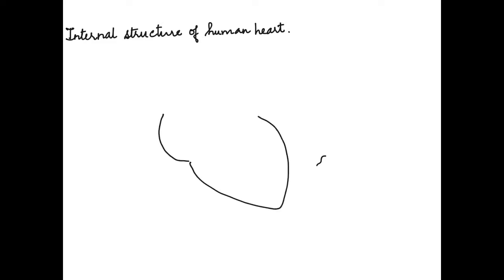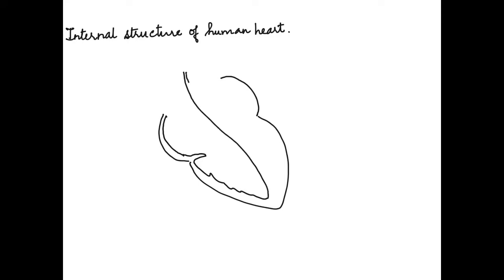We begin with drawing the upper chambers and the lower chambers. The upper chambers are thin-walled, so we trace the line inside to form a thin wall structure, make a projection for the wall, and trace it up to form the bifurcation of the right and left side of the heart. The other side, the left side, has slightly thicker walls as compared to the other side.